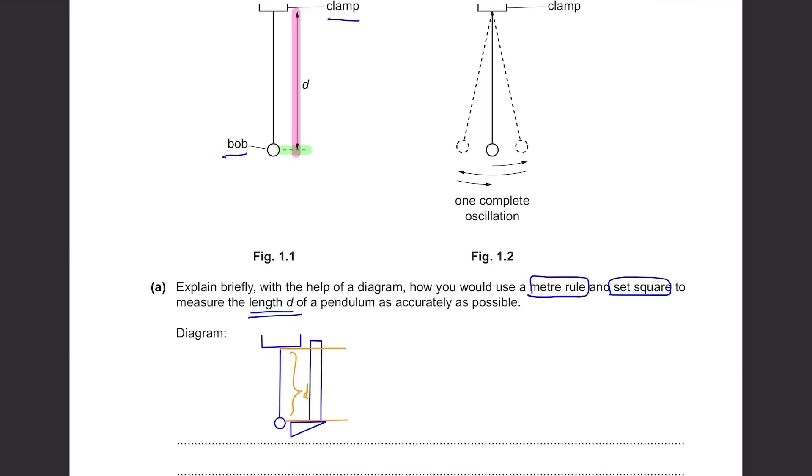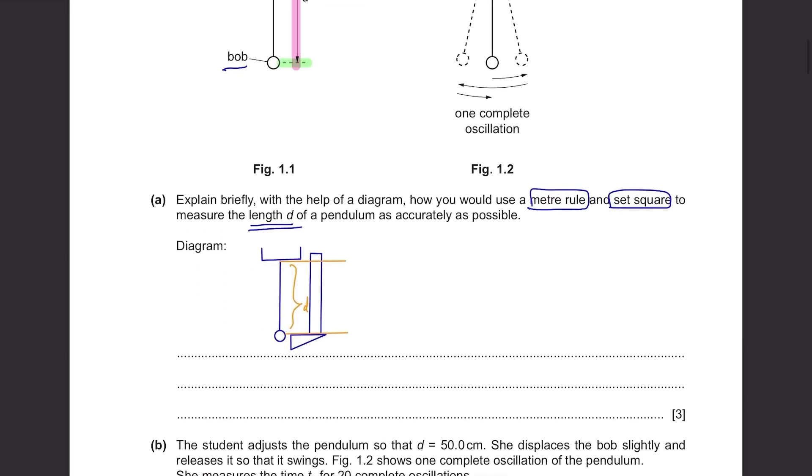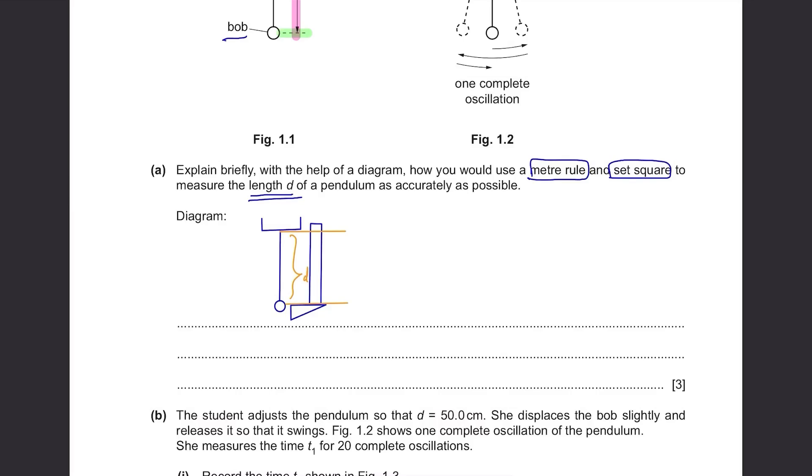Make sure the ruler can measure the distance from the center of this bob and right below the clamp. So place the set square and meter rule perpendicular to each other as shown in the diagram and measure the distance from the center of the bob to the bottom of the clamp. Also when reading from the ruler, read it perpendicular from the ruler to avoid parallax error.